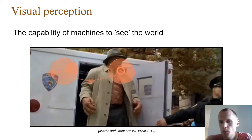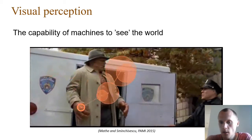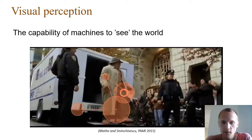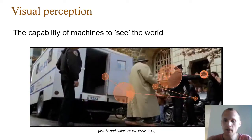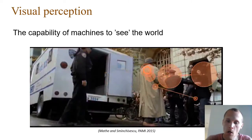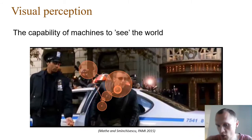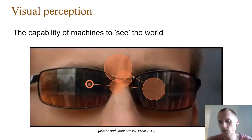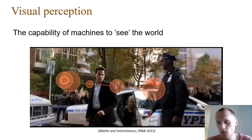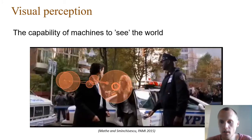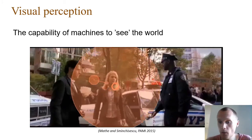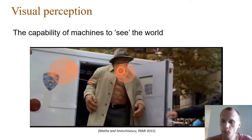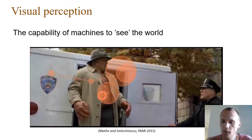We can understand the lightning, the general context, and even predict the big picture of what's going on. We use visual perception in our daily lives to do all sorts of tasks. It's a very fundamental problem which, in the context of artificial intelligence and computer vision, is being tackled — the goal is to come up with machines or algorithms that can perform similar things automatically.